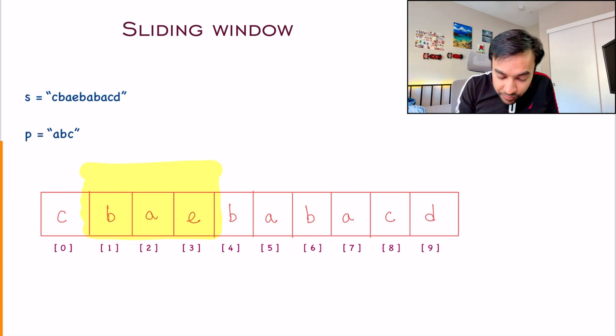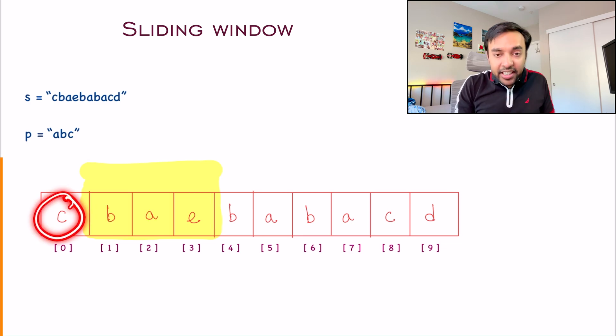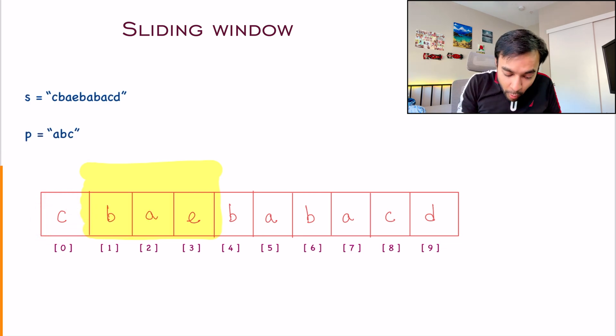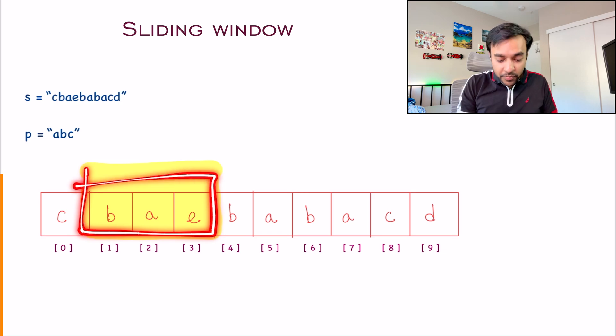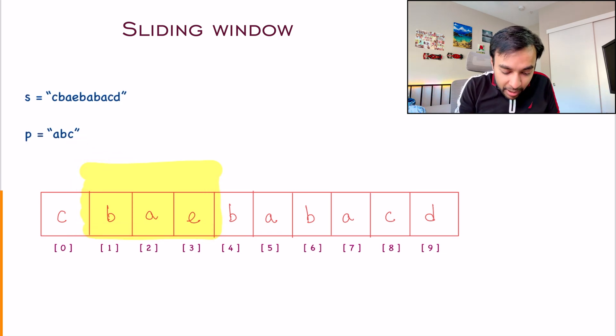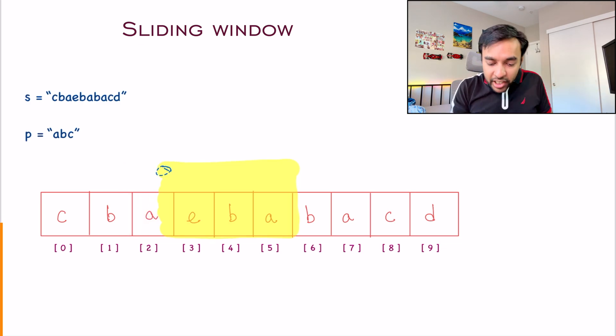And what just happened? This new character got added. And this character got deleted. Now I have a new window over here. Are these two strings anagram? No. That means I can move ahead. I see this window. Again, these two strings are not anagrams. So you can move ahead. This way you will keep on moving ahead. Once again, these are not anagrams.